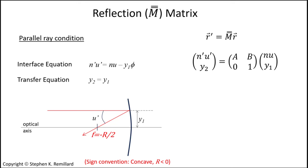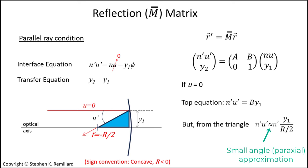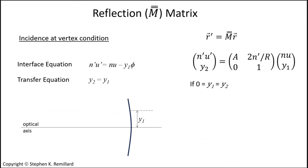Something to note about a concave reflector is that its radius of curvature is a negative number, and thus the focal point is a distance negative r over 2 from the mirror vertex. Because the ray is incident parallel, the incident ray angle u is 0. And from the top equation in the matrix with u equal to 0, n prime u prime equals b times y1, where y1 is the ray height at reflection. Inspecting the right triangle that gives this relationship between u prime and y1, the only possibility is that b is 2 n prime over r, the radius of curvature.